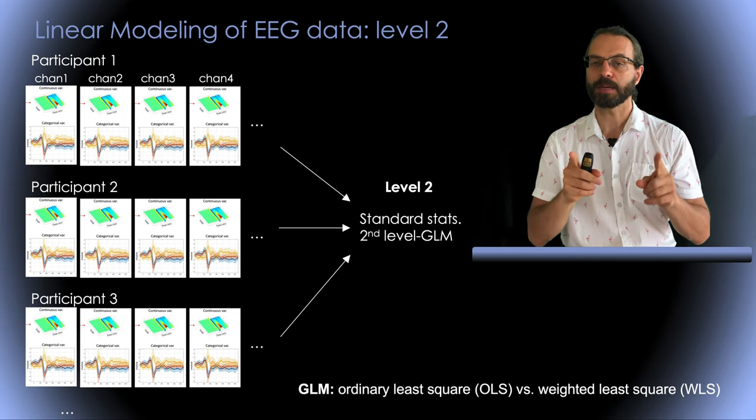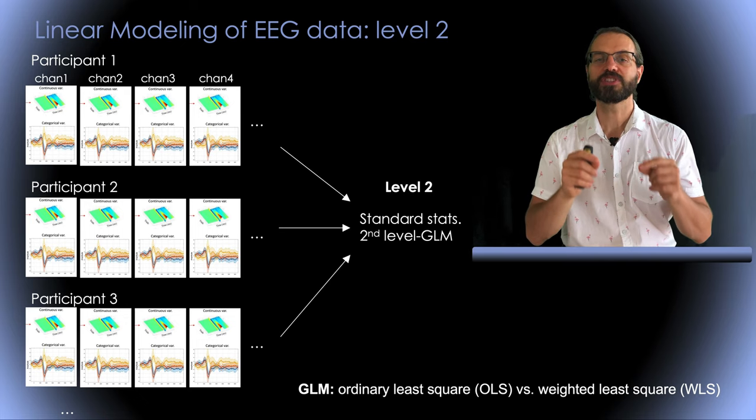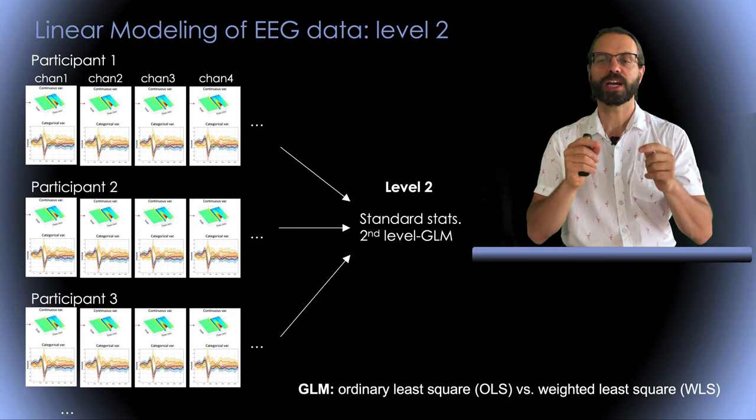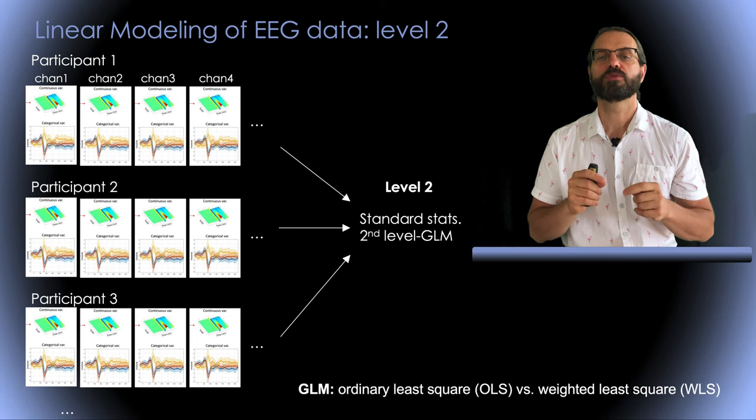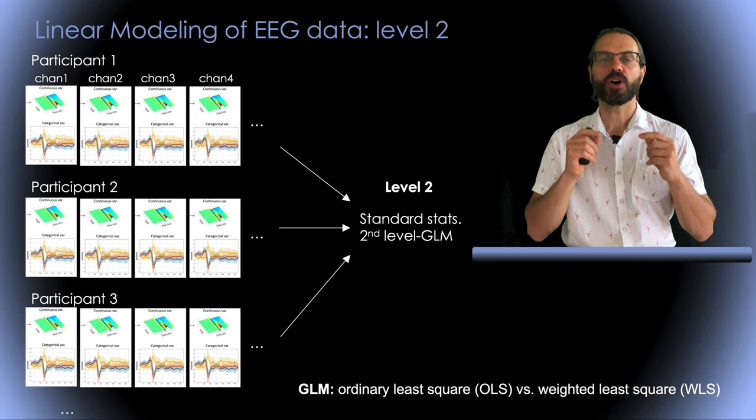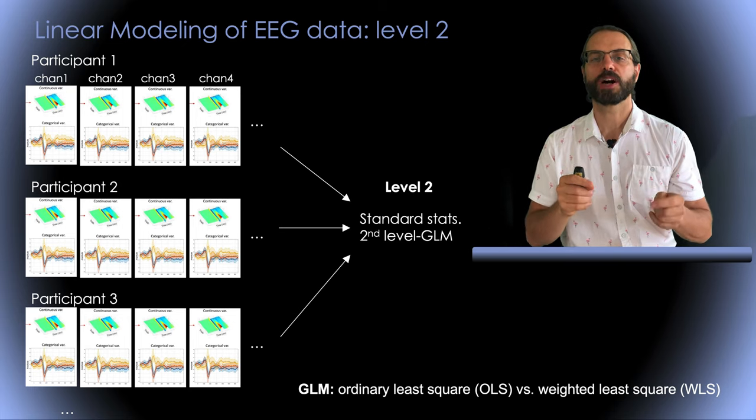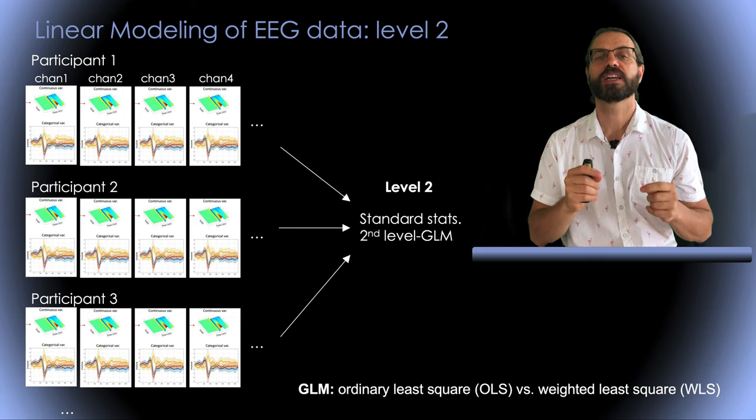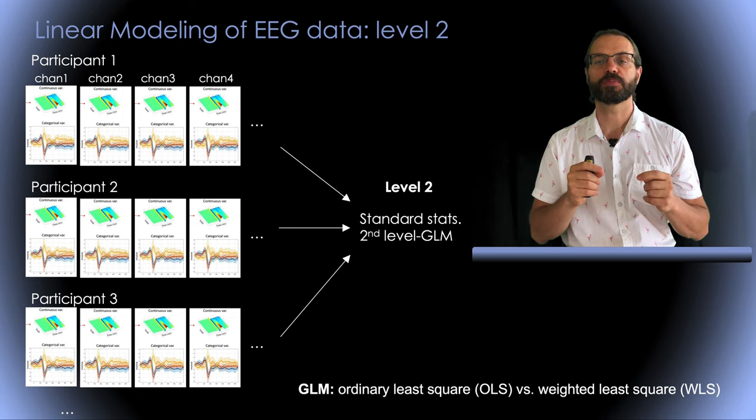However, instead of using average electrode timecourses for each subject as input, we use beta timecourses as input. Instead of using the grand average ERP for a given type of stimulus, we use the grand average beta parameter representing that type of stimulus. If you have a simple model with only different types of stimulus in your model, performing statistics on the beta will actually be equivalent as performing statistics on ERP.